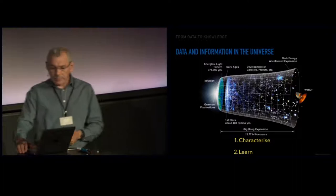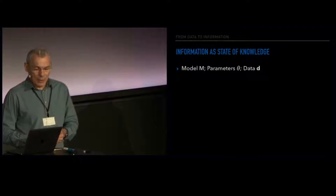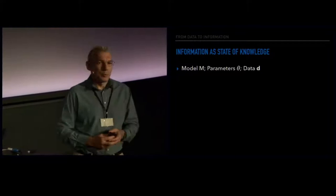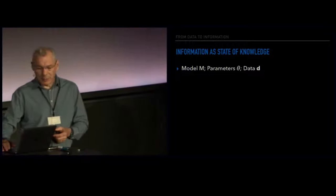I'm not going to be talking about information in terms of entropy or anything like that, but as a state of knowledge. I'm going to take a very Bayesian perspective and look at what we can learn from data. In this context, it's useful to decide what is the model that we're working in, what are the parameters of the model that we're trying to infer, and what's the data that we're working with. And the goal is basically the posterior.